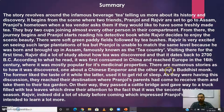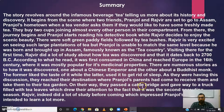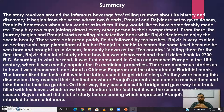Rajvir mentions numerous stories about tea — including the story of the Chinese emperor who liked the taste of tea, and the Buddhist monk who drank it to stay awake. As they had this discussion, they reached their destination where Pranjol's parents had come to receive them. On the way to their tea garden they passed a cattle bridge and gave way to a truck filled with tea leaves, indicating it was the second sprouting season — so they were heading to the factory where the tea would be processed.